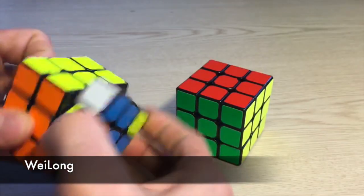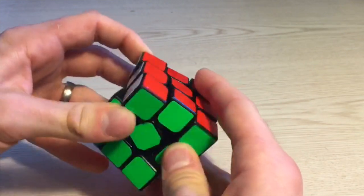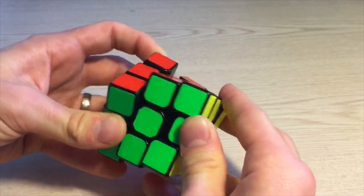This cube seems to fix some of the internal locking problems that the Weilong had, but seems to add some locking issues on the outside. The cube tends to flex a lot and although it has the ability to corner cut well, it does still catch.